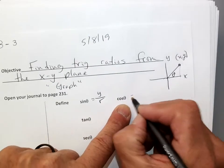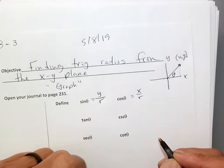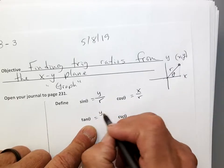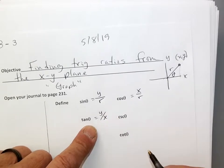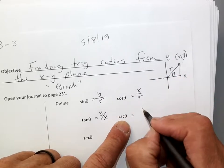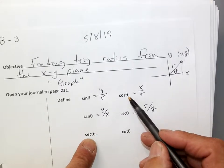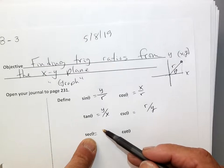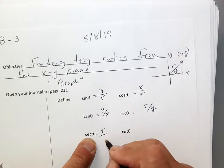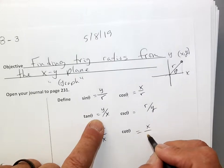So the cosine, which is the adjacent over the hypotenuse, is really x over the radius. And the tangent, which is opposite over adjacent, really is the y value over the x value. The cosecant is the inverse of sine, so instead of y over r, it's the radius over the y value. The secant, which is the inverse of cosine, is my r over x — my radius over my x. And cotangent, the opposite of tangent, is going to be the x value over the y value.